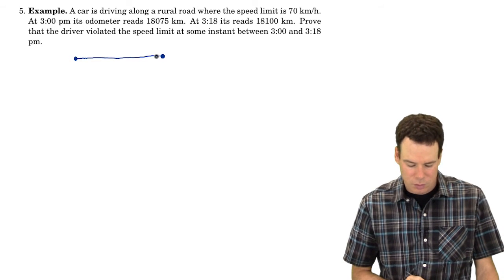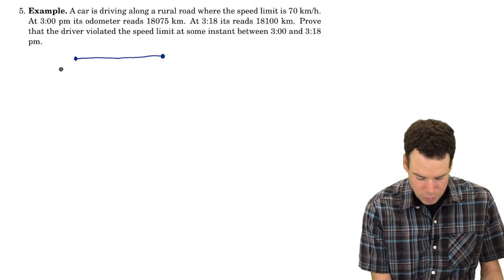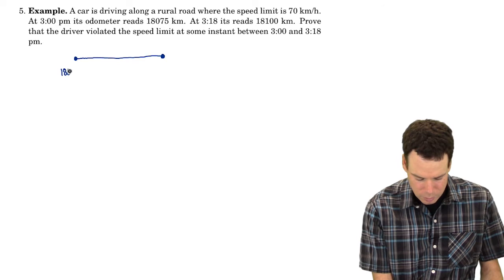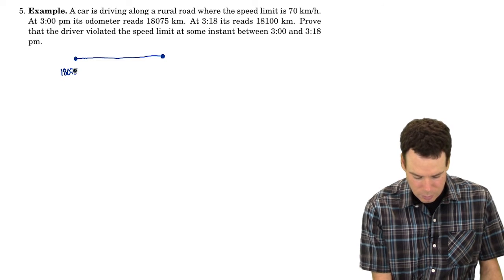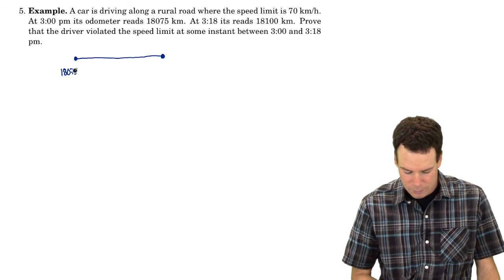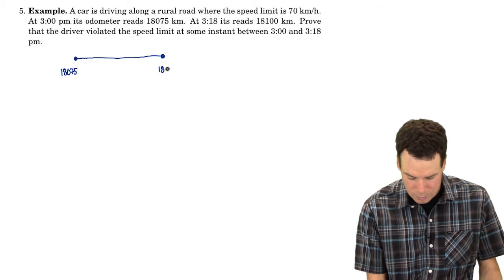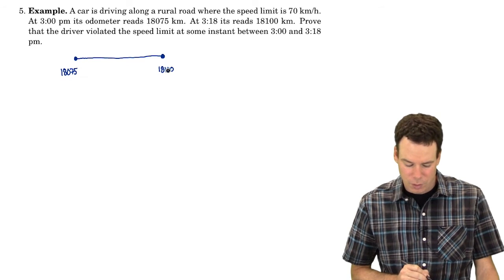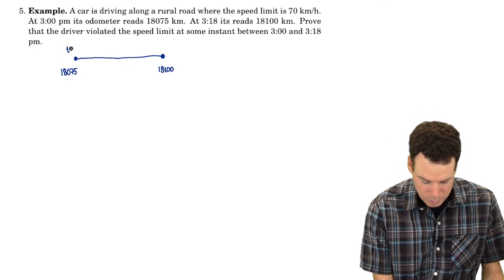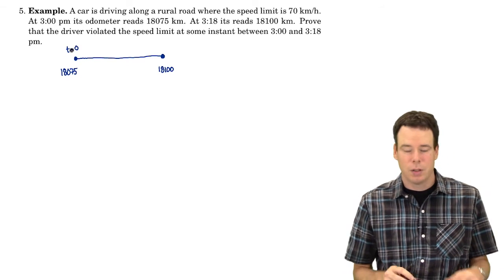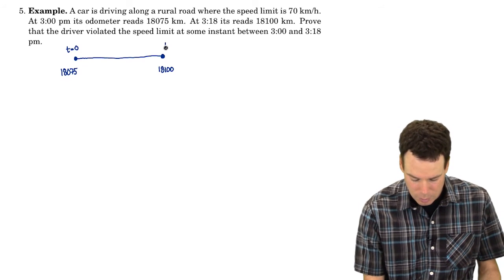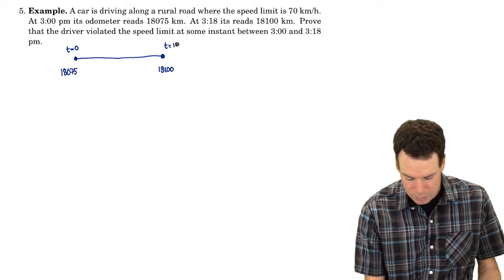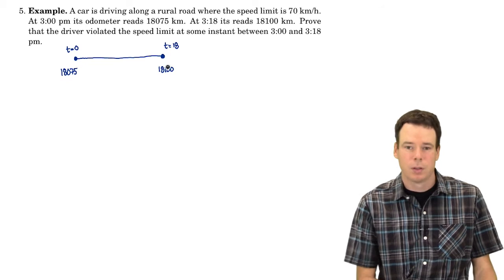Let's say that's the section of road we travel along. Our odometer reads 18,075 when we start, and at the end of 18 minutes it reads 18,100. This is when time is zero. Let's imagine at 3 o'clock that's our time zero, and then 18 minutes later that's our odometer reading.